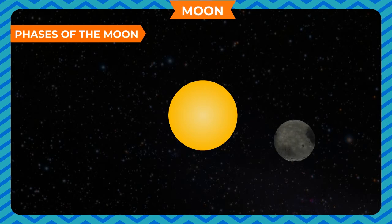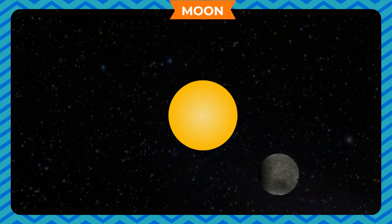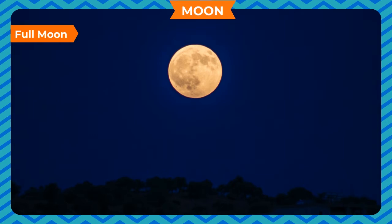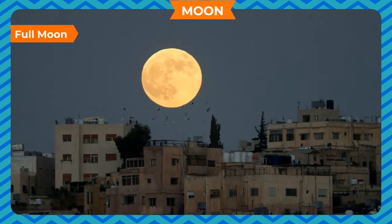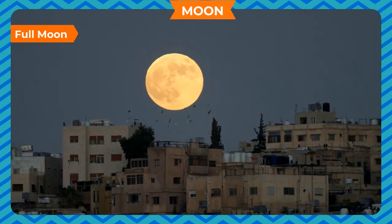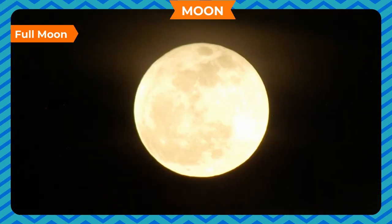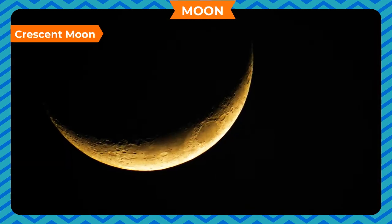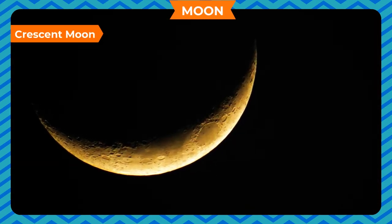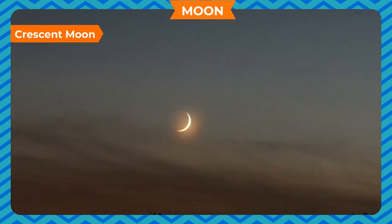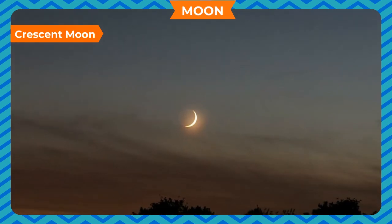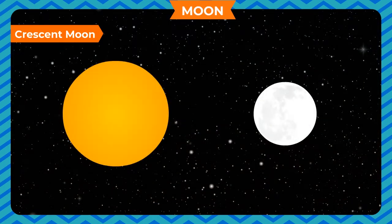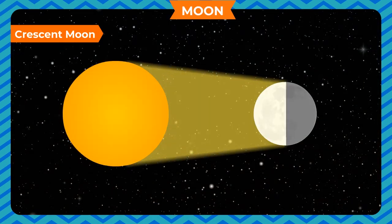Some typical phases of the moon are: Full Moon — when rays of the sun fall directly on the moon, it is seen as a flat disk. This is called full moon. Full moon day is called Purnima. Crescent Moon — when only a part of the moon is visible to the Earth, it is called crescent moon. This is so because the sun rays fall only on a part of the moon.